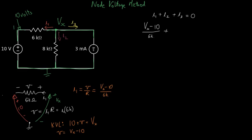So I2 is Vx minus the destination voltage is 0, the resistance is 8000. And I3, we can see from the current source is actually minus 3 milliamps. That sums up to 0.